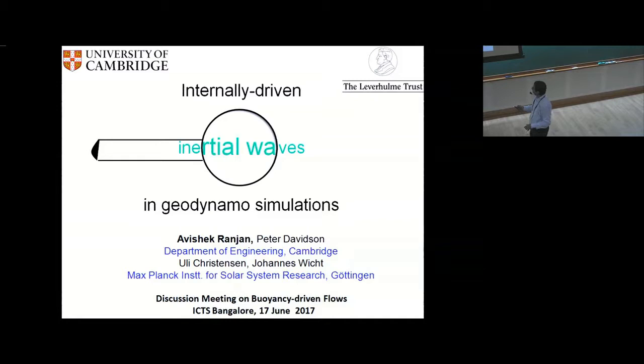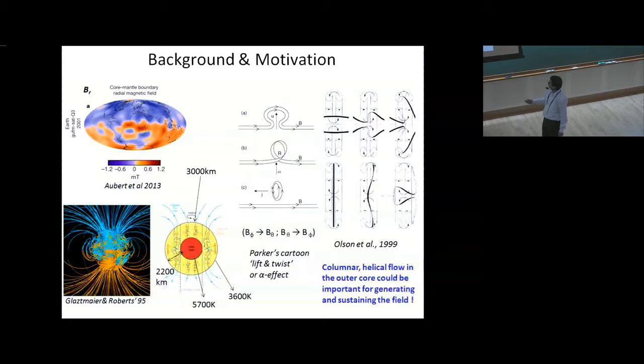We are going to move from the ocean, which Mani talked about, to the deep core of the earth. If you look at this picture, that is the inner core, that is the outer core, and between them we have liquid iron which is very, very hot. In school we were taught that there is a big bar magnet in the core of the earth that creates a magnetic field — but it is untrue.